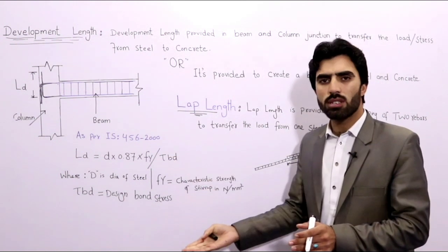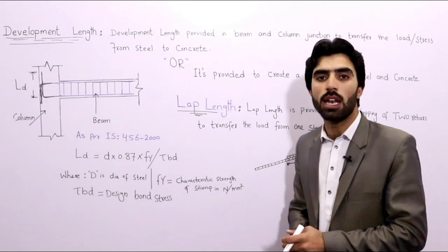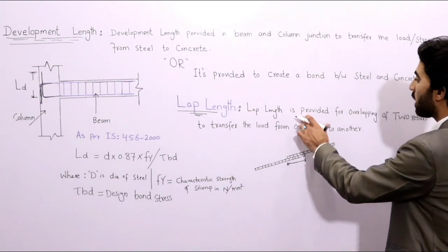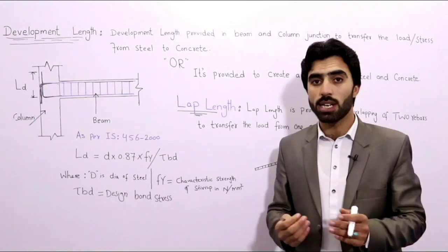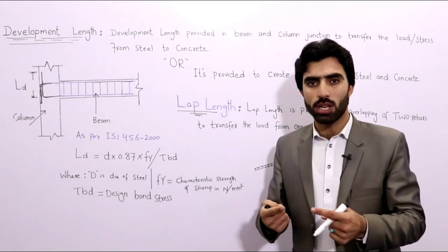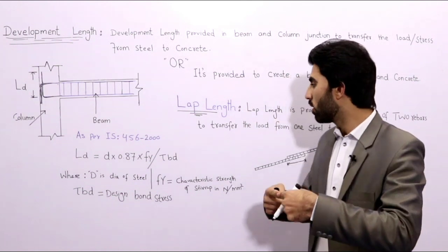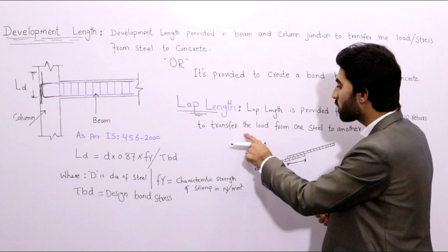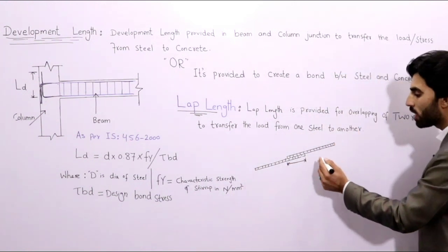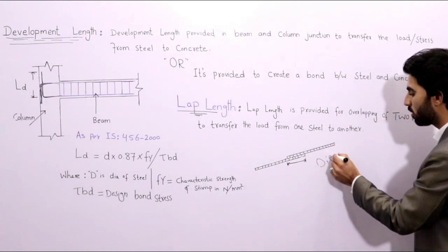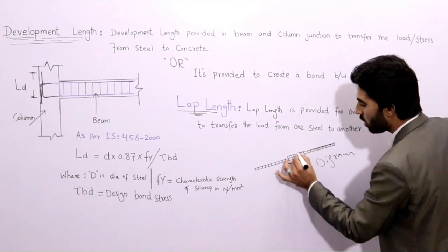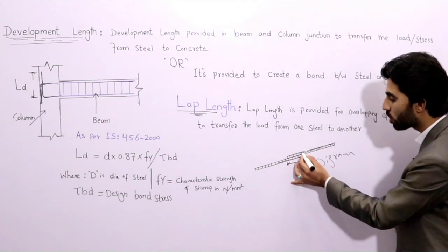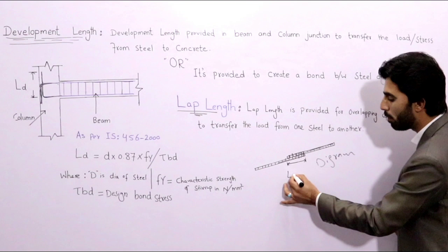Now we move towards lapping length. Lap length is provided for overlapping — every student knows about lapping length. It is the overlapping of two rebars, or two steel bars, to transfer the load from one steel to another. You can see in the diagram — this is one steel and this is the other steel. When we bind these two steels together, it is called lapping.